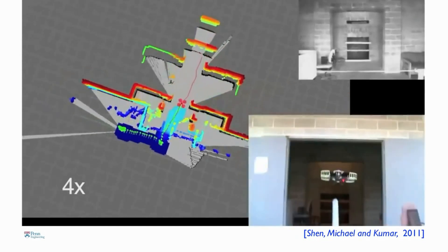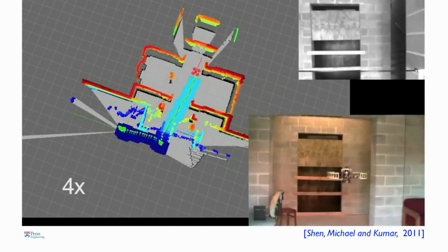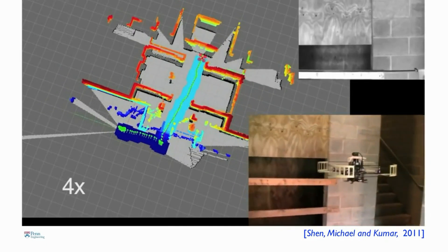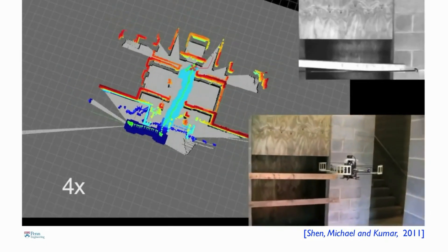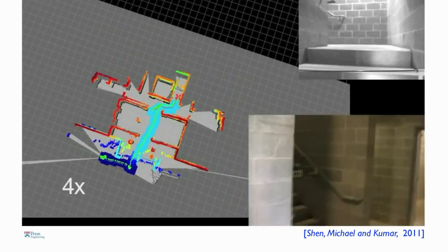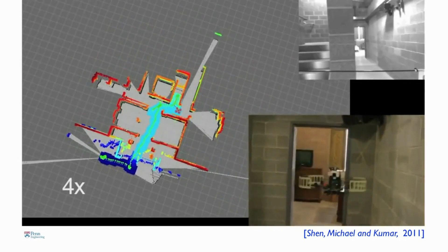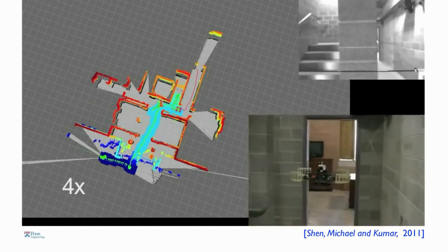The robot figures out what the features are, builds the map, and determines where it is with respect to the features. It then estimates its position 100 times a second, allowing us to use the control algorithms I described earlier.